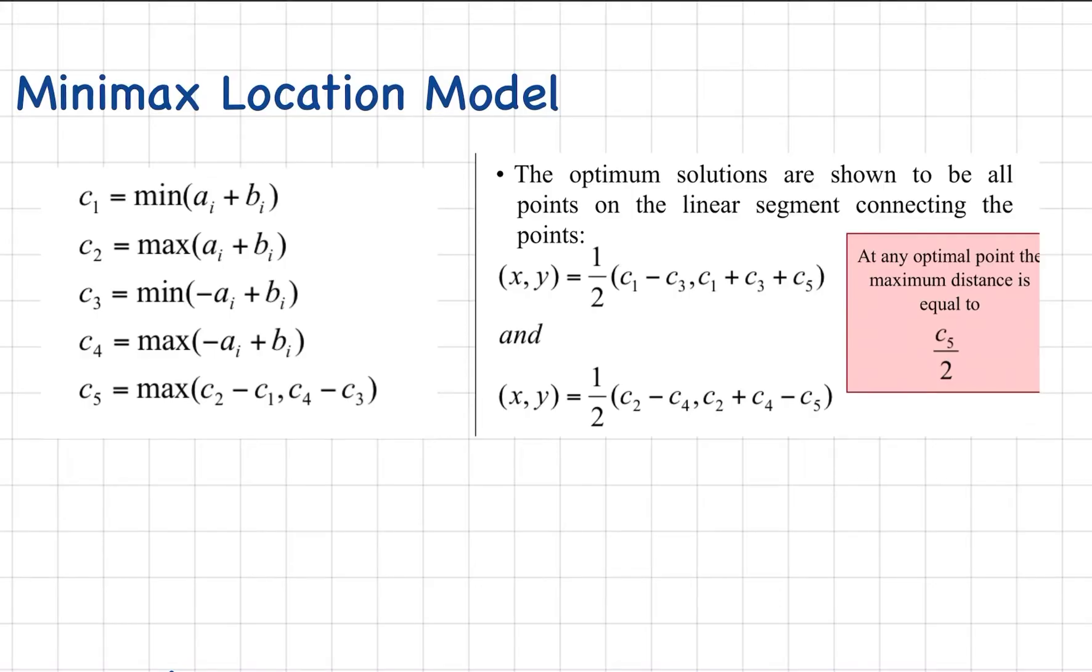For the optimum solution, we have two points. The first set of points which is the coordinate points of X and Y. The formula is one half of the value of C1 minus C3 for the X coordinate. This is the X coordinate and this is the Y coordinate, C1 plus C3 plus C5. The second set of points, the X value is C2 minus C4 and the Y is C2 plus C4 minus C5. Take note that at any optimal point, the maximum distance is equal to C5 over 2.